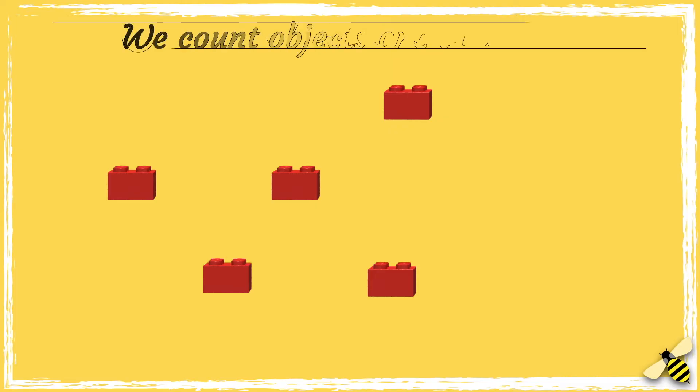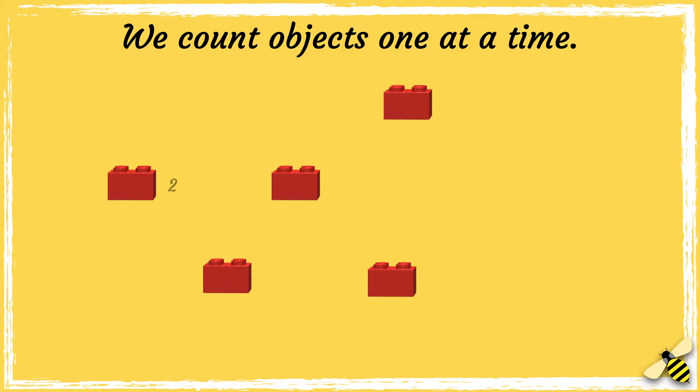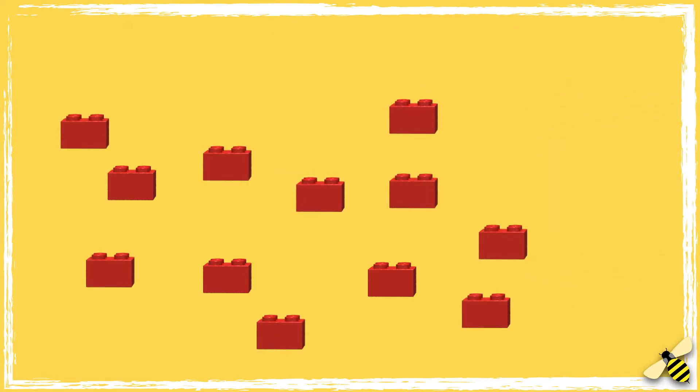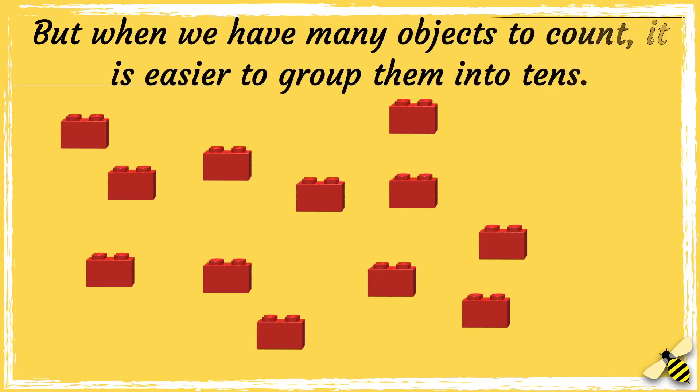When we count objects, we count them one at a time. One, two, three, four, five. But when we have many objects to count, it's easier to group them into tens.